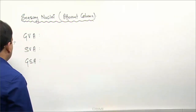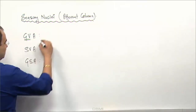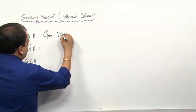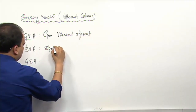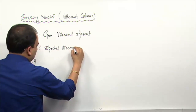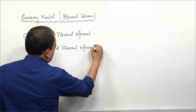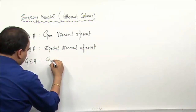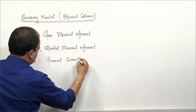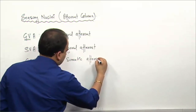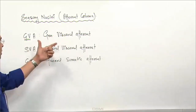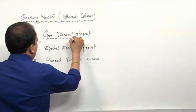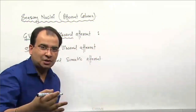GVA - general visceral afferent. When you say the word 'general visceral,' we are talking about the general sensation from the viscera.